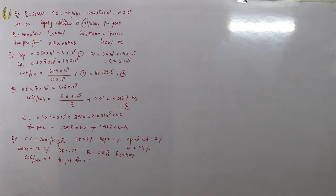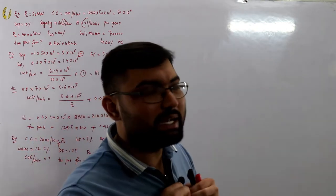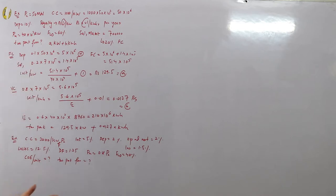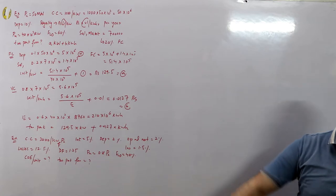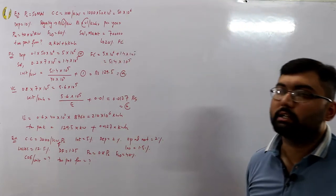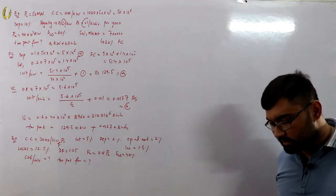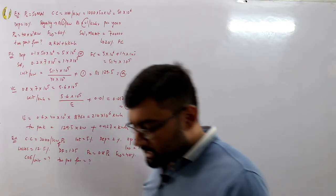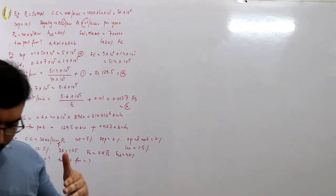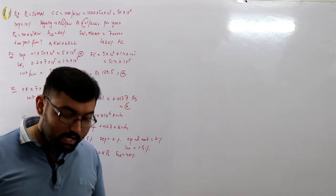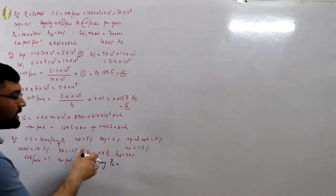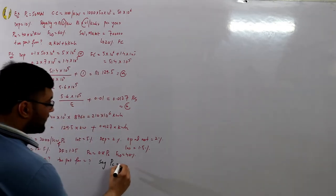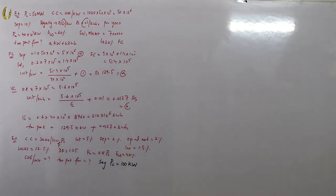There's a point of confusion — the installed capacity is not given, so the data appears incomplete. In an exam you might flag this, but in engineering, assumptions are acceptable. We assume installed capacity = 100 kilowatts, following the book's approach.